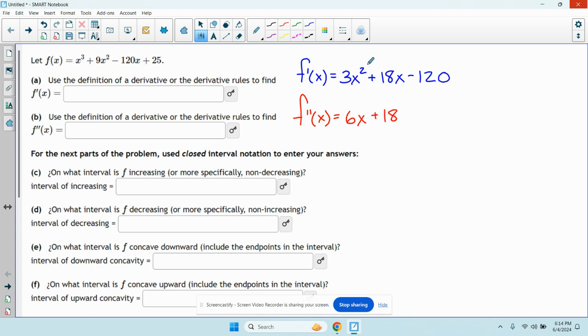So then this says for the next part of the problem, use closed interval notation to enter your answers. Closed interval notation would just be brackets separated by a comma. So on what intervals is f increasing or more specifically non-decreasing?